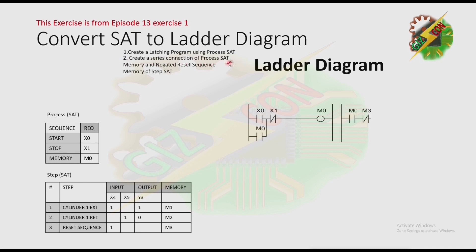Next, create a series connection of process SAC memory and negated reset sequence memory of step SAC. It is the series connection between process SAC memory, which is m0, and negated reset sequence memory for step SAC. This is our reset sequence — we have m3, and we need to make it negated. Then we have a normally open contact of m0 as stated.